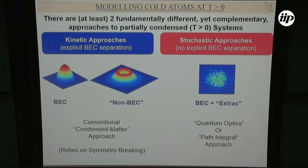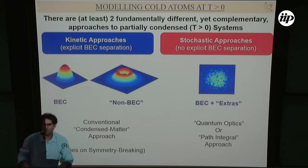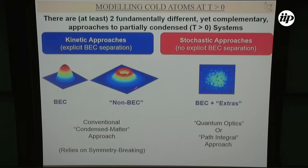In the kinetic approach, it's like a two-fluid model in helium. You assume you have a condensate — a phase-coherent structure — and everything else is the non-condensate, which is just the thermal cloud. These two are coupled. This approach relies on symmetry breaking: when I take my Bose field operator, I have a part with a well-defined phase and the rest where the interesting physics is happening.